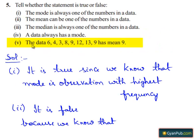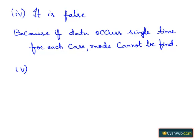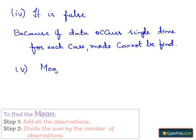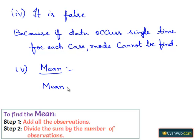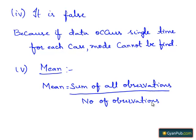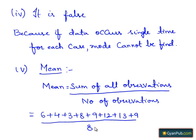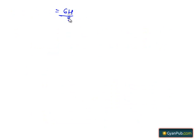Now moving to the fifth part. Here they have asked us to find whether the data has a mean of 9. So let us find the mean to check whether it is 9 or not. Mean is equal to sum of all the observations by number of observations. Here the number of observations are 8 and we write the sum of all the observations. When we solve this we get 64 by 8, which is equal to 8. Therefore the mean of the data is equal to 8, so the above statement is false, as we got mean equal to 8 instead of 9.